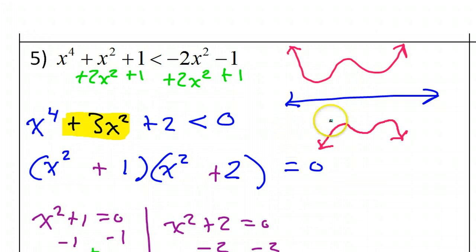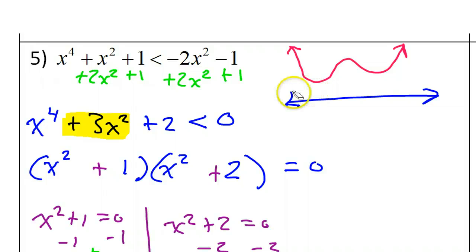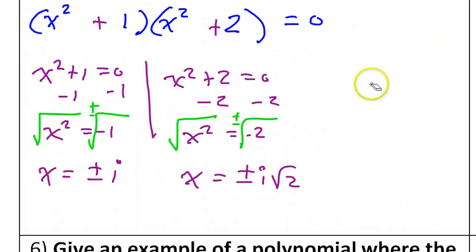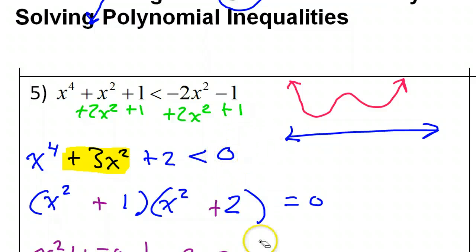One way to figure this out is to notice we have a positive leading coefficient. That means it's an upward-facing graph. So if there are no x-intercepts due to all imaginary zeros, it must be that the entire graph is above the x-axis. No part of the graph is below zero, which means we're going to have no solution.